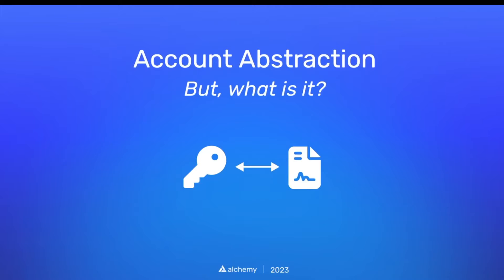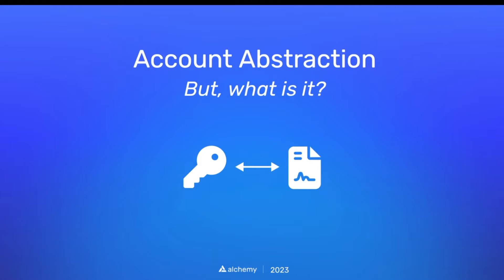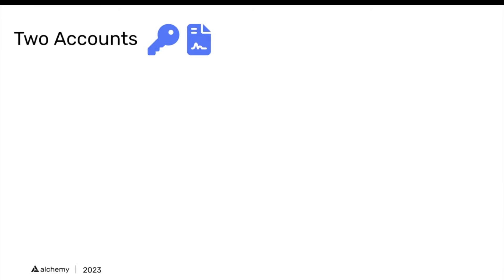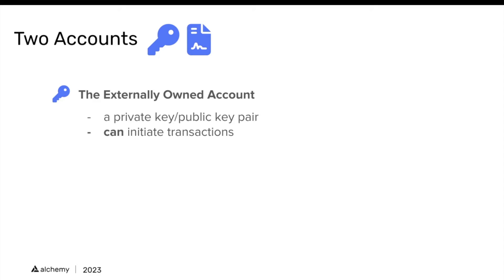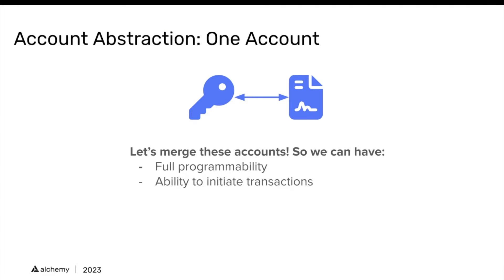So let's cut to the heart of the matter. Account abstraction — what is it? We have two accounts. The first is the externally owned account, which is a private key/public key pair. It can initiate transactions, and for the most part, externally owned accounts are the ones we use as users on-chain today. Then we have the smart contract: a fully programmable piece of code deployed to the blockchain. Versus the externally owned account, it cannot initiate transactions. Account abstraction promises to unify these two accounts so we can get the benefits of both.